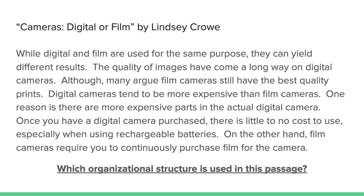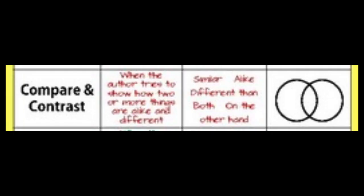Our last one from today: Cameras — Digital or Film by Lindsay Crow. Focus on the organizational structure used in this passage. While digital and film cameras are used for the same purpose, they can yield different results. The quality of images has come a long way on digital cameras, although many argue film cameras still have the best quality prints. Digital cameras tend to be more expensive than film cameras because there are more expensive parts. Once you have a digital camera, there is little to no cost to use it, especially with rechargeable batteries. On the other hand, film cameras require you to continuously purchase film. Which organizational structure is used? We've got digital, we've got film — they're different, they're the same. When we have differences and similarities, we are using compare and contrast.